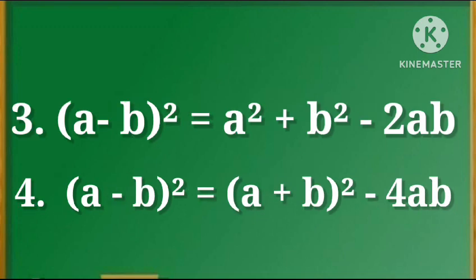3. (a minus b) whole square is equal to a square plus b square minus 2ab. 4. (a minus b) whole square is equal to (a plus b) whole square minus 4ab.